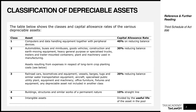In tax, we have broken down the classes for capital allowance into five main classes. Class one, also called pool one, contains all computers and data handling equipment together with their peripheral devices. Examples include laptops, modems, keyboards, and mice. Class one assets are depreciated at a rate of 40% on a reducing balance basis.